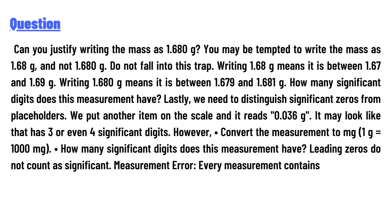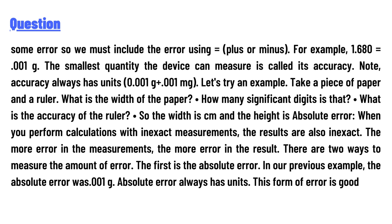Every measurement contains some error, so we must include the error using the ± notation. For example, 1.680 ± 0.001 g. The smallest quantity the device can measure is called its accuracy. Note: accuracy always has units, for example 0.001 g.